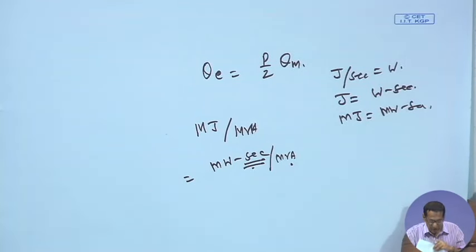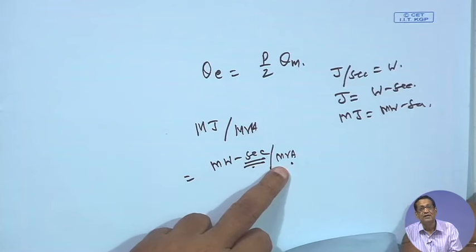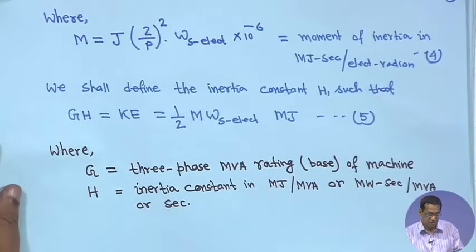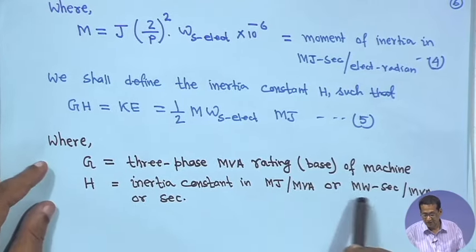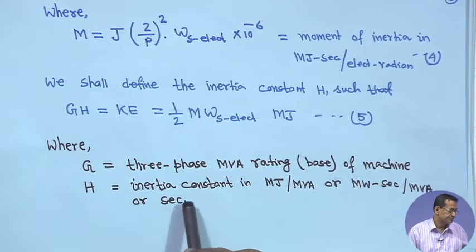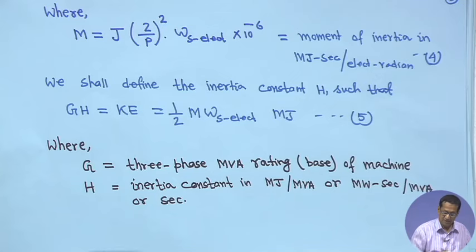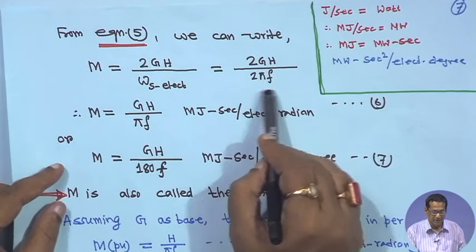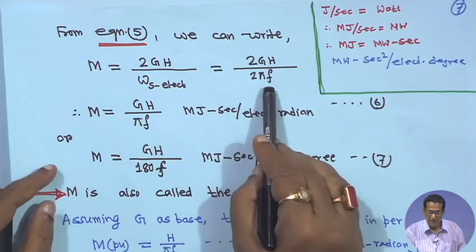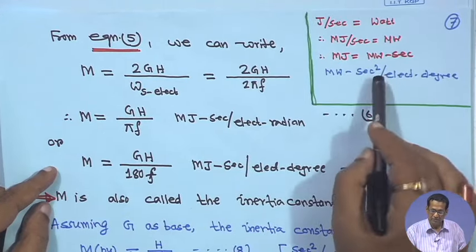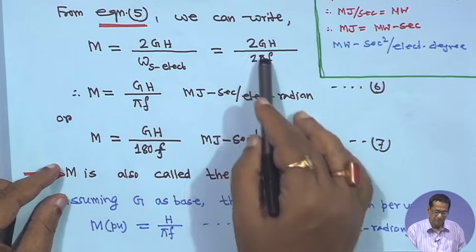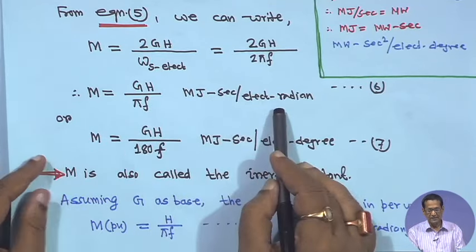If you read some books you will find inertia constant H is given in seconds — it is actually mega watt·second per MVA, and since mega watt per MVA is dimensionless, it is given in seconds. From equation 5, M = 2GH / ωs_electrical = 2GH / (2πf), writing ωs_electrical = 2πf. Therefore M = GH / (πf) in mega joule·second per electrical radian. If you want in degrees, instead of π use 180: M = GH / (180f) in mega joule·second per electrical degree. M is also called the inertia constant.